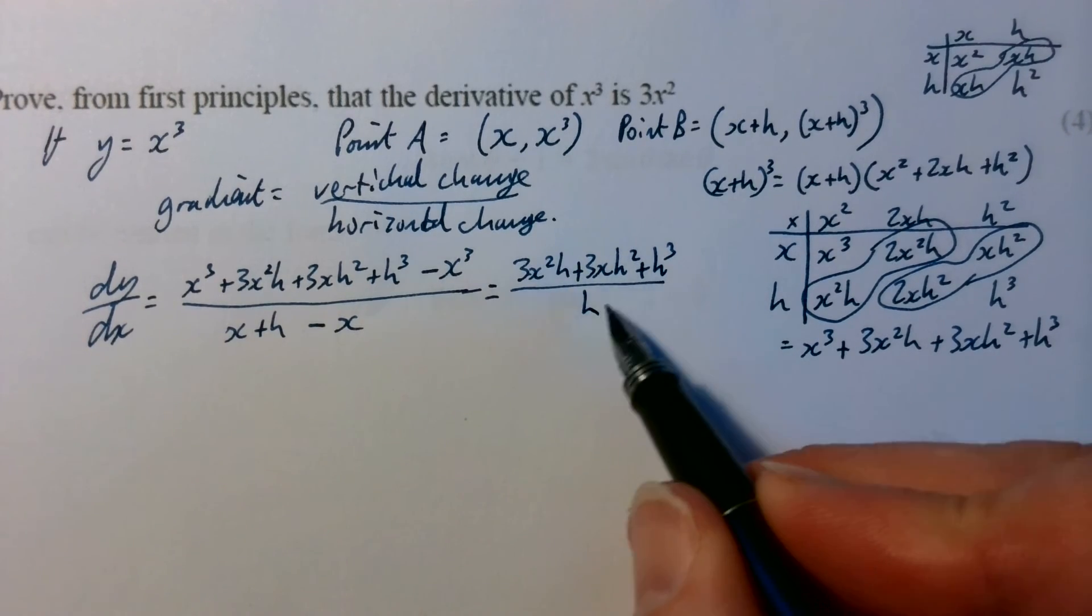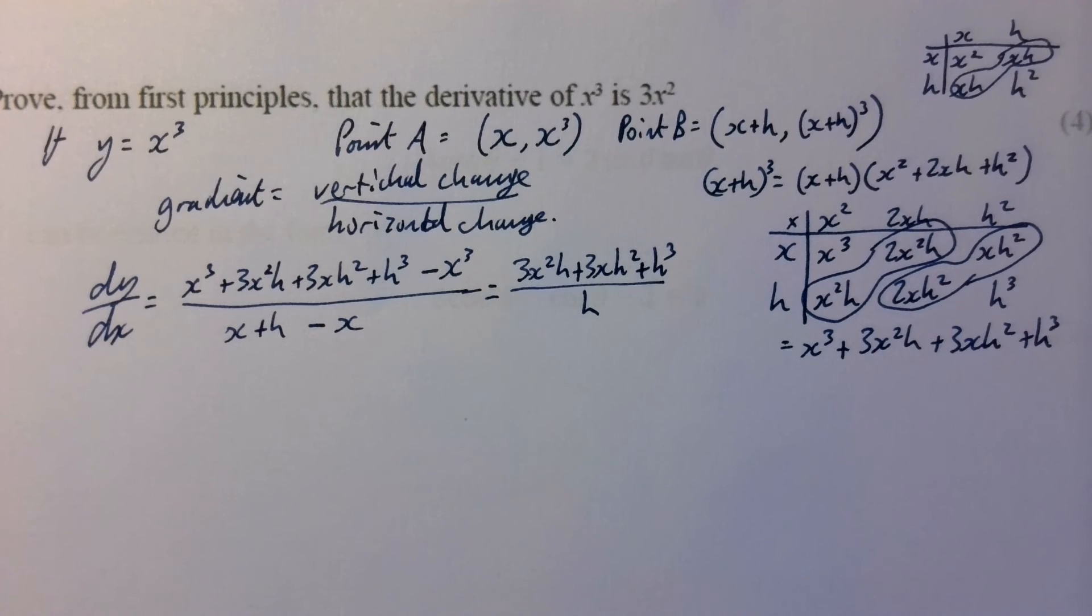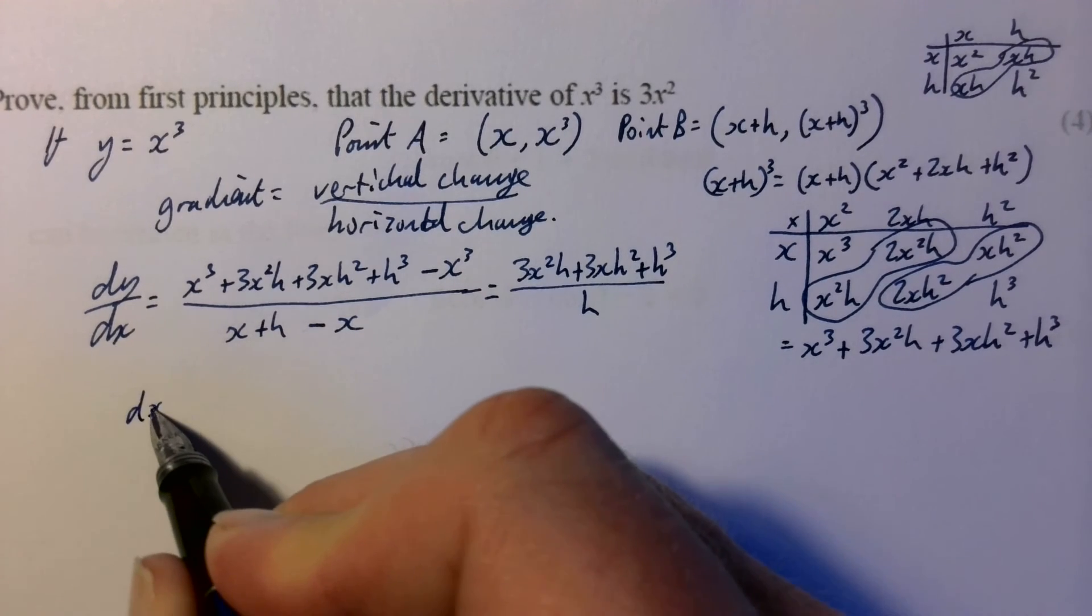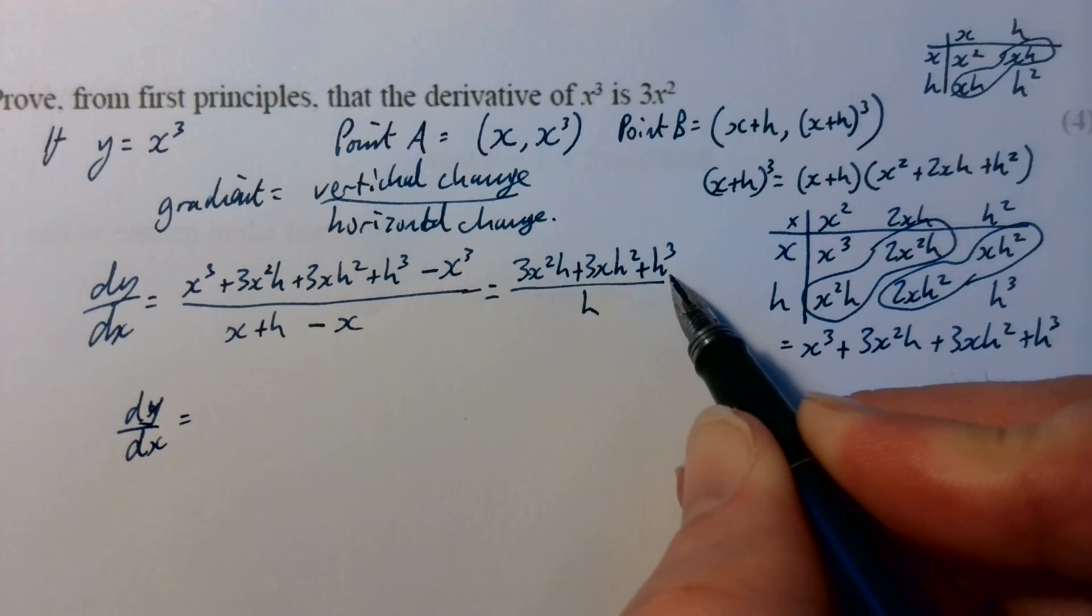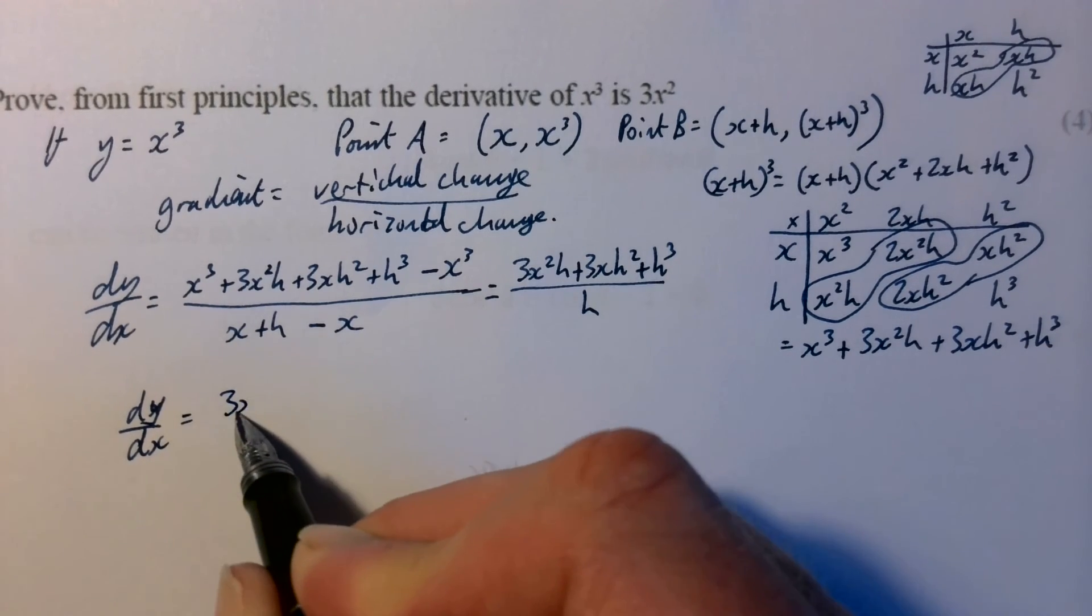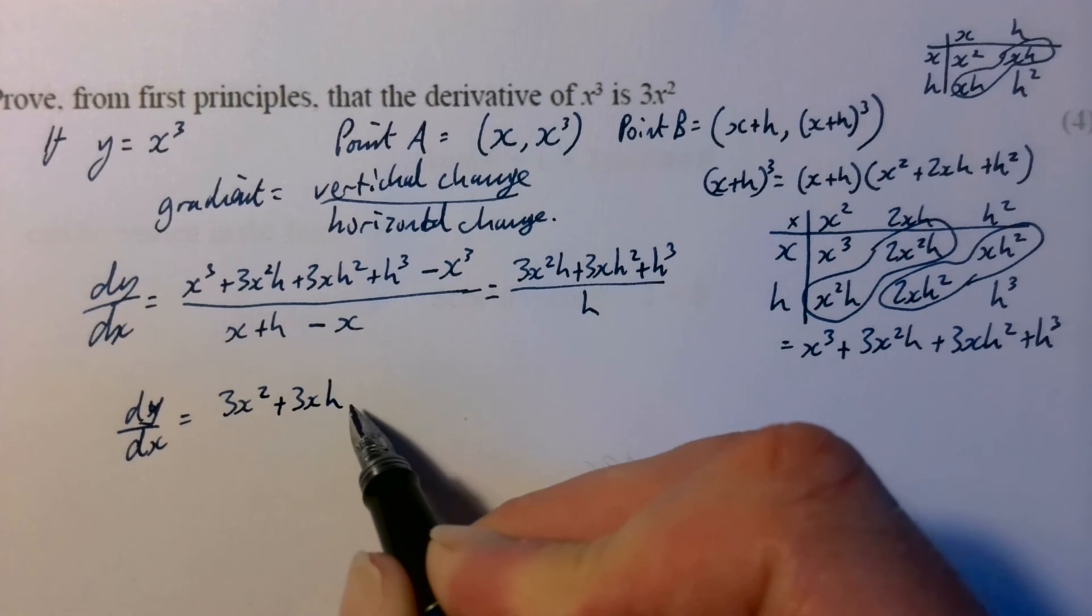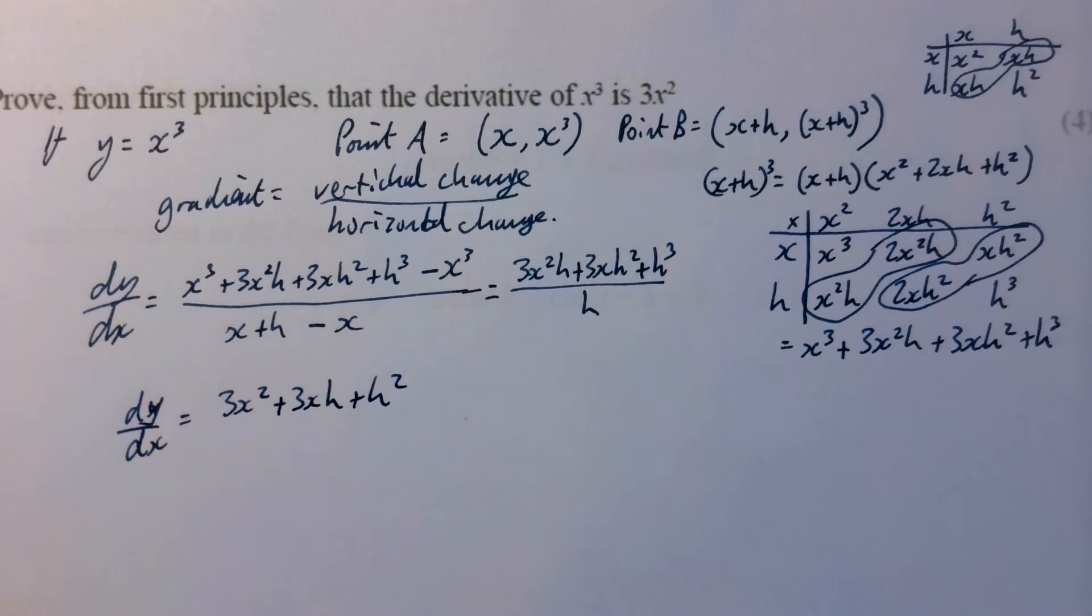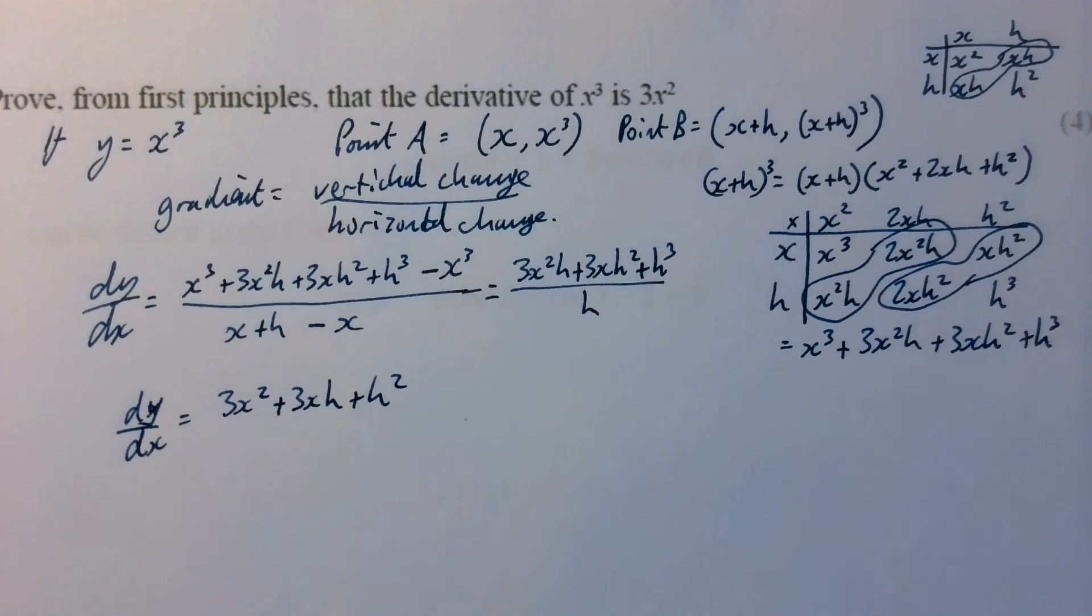Now, there's an h in all of those terms on the top and one on the bottom. So you can divide top and bottom by h, and that gives us 3x squared plus 3xh plus h squared. And you'll notice we've got the 3x squared that we want there, but these other bits here...